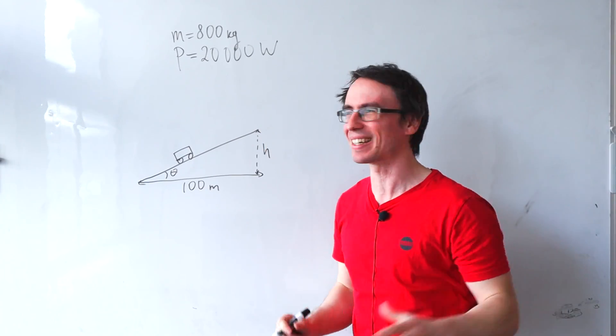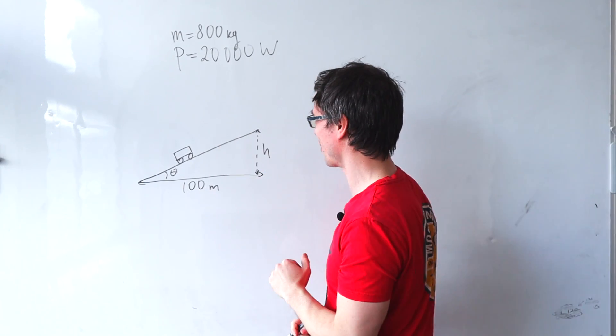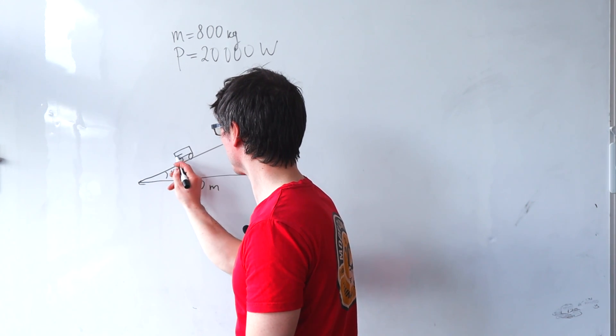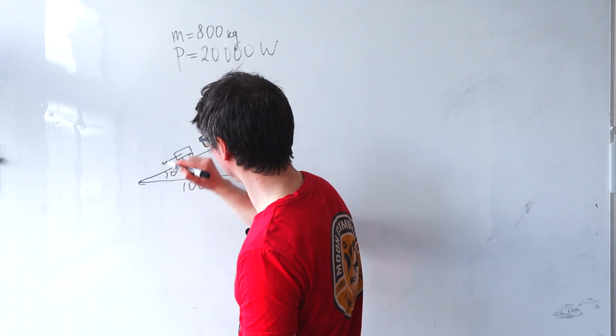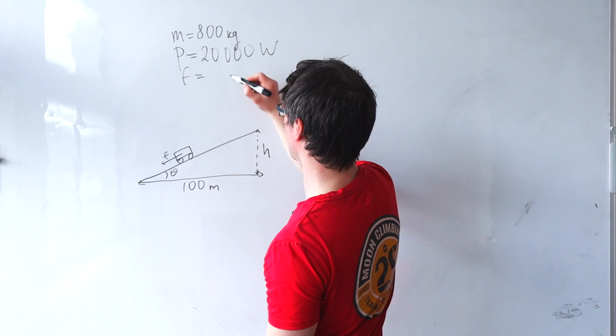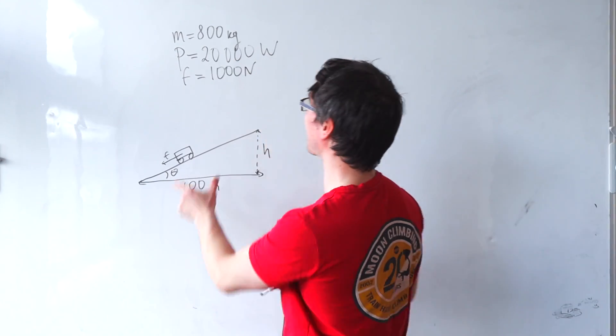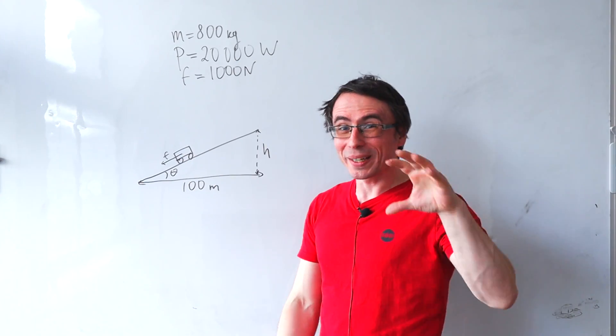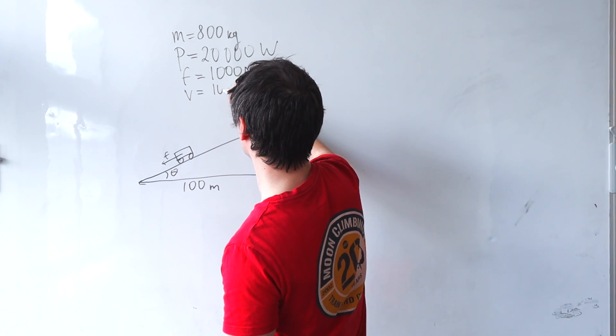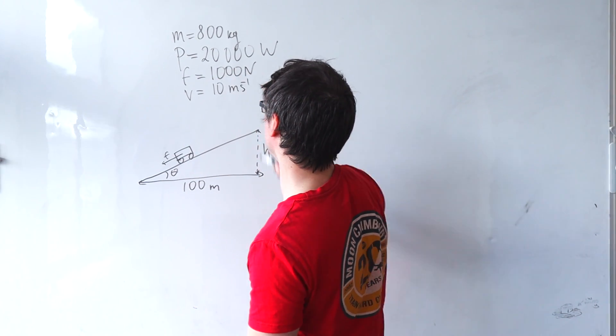To make it more interesting we're also going to add a frictional force which is opposite to the motion. So the total drag force is 1000 newtons. We're going to keep the car moving at a constant speed, so let's say 10 meters per second.